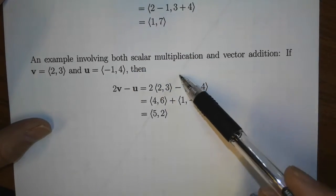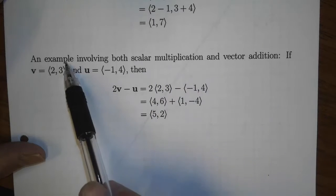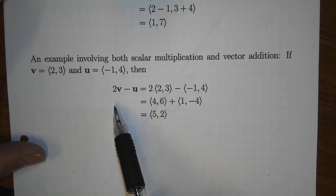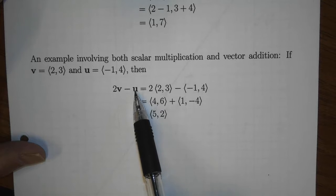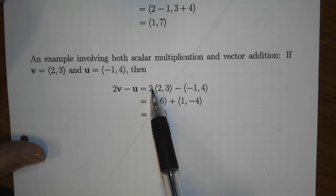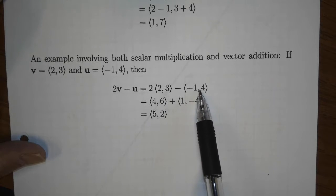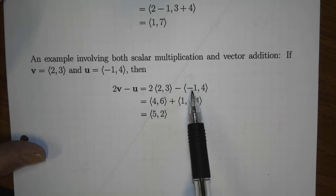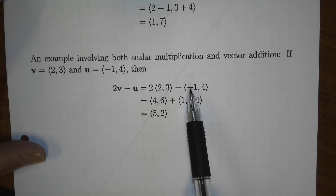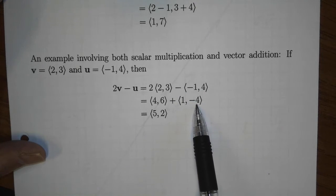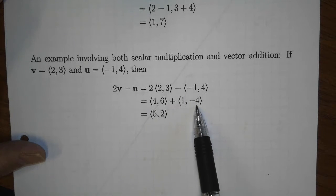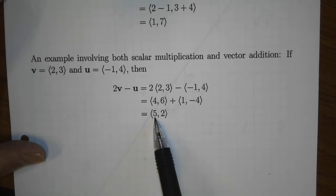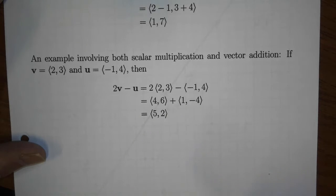Here's an example involving both scalar multiplication and vector addition. Suppose v = ⟨2, 3⟩ and u = ⟨-1, 4⟩. Let's calculate 2v − u. First, multiply v by the scalar 2 to get ⟨4, 6⟩. Then take the negative of u — multiply each component by -1 — to get ⟨1, -4⟩. Now add the components: 4 + 1 = 5, and 6 + (-4) = 2. So 2v − u = ⟨5, 2⟩.